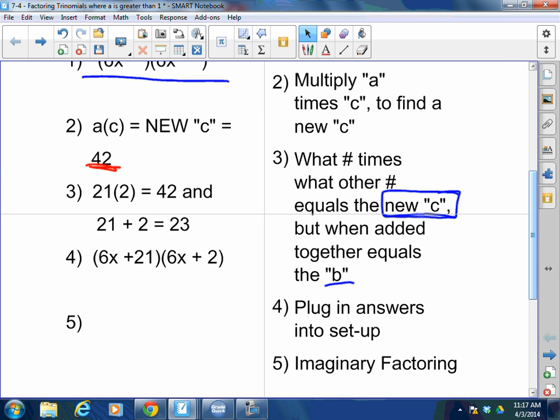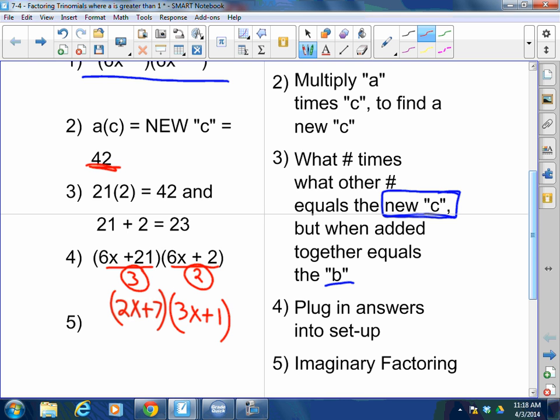Step 5, imaginary factoring. Let me explain what that means. I have taught you already that if you have a GCF, for example here the GCF is 3, I've taught you to put the 3 out here and then have the leftovers, correct? You're going to do the same exact thing, except it's imaginary factoring. So I'm not going to put the 3 outside. I can take a 2 out of 6x + 2, but I just write down the leftovers. I do not show this 2 and I do not show that 3. This is imaginary factoring.